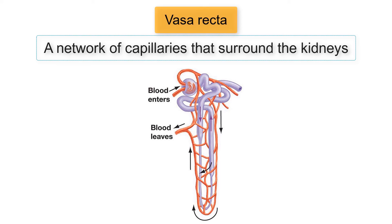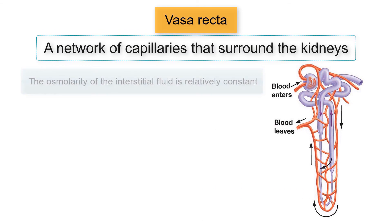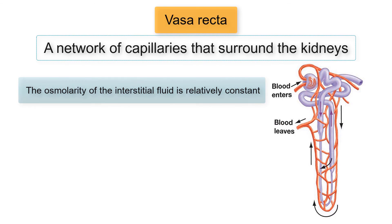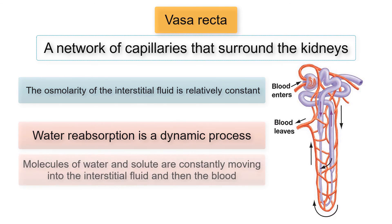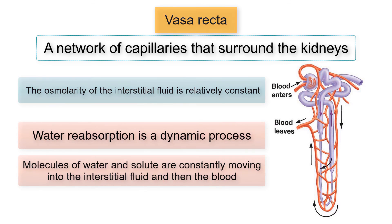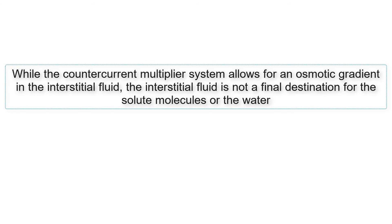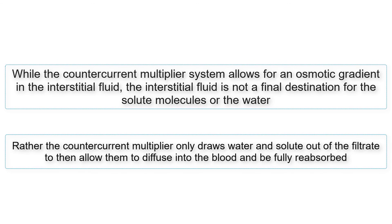Similarly, as water diffuses out of the descending limb of the loop of Henle and into the interstitial fluid, it does not remain there but continues to diffuse into the Vasa Recta. Since the water only passes through the interstitial fluid, the osmolarity of the interstitial fluid remains relatively constant. The key to understanding how water is transported from the loop of Henle into the blood is to recognize that water reabsorption is a dynamic process — molecules of water and solute are constantly moving into the interstitial fluid and then into the blood. The interstitial fluid is not a final destination; rather, the countercurrent multiplier draws water and solute out of the filtrate to allow them to diffuse into the blood and be fully reabsorbed.